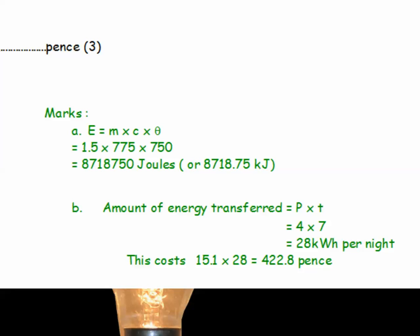And for part B, how much energy is transferred? Energy is P times T. The power rating is 4 kilowatts. And the time that it's switched on is 7 hours. So it uses 28 kilowatt hours per night. Now, the company charges 15.1p for 1 kilowatt hour. So that's 15.1 times 28, which is 422.8 pence.